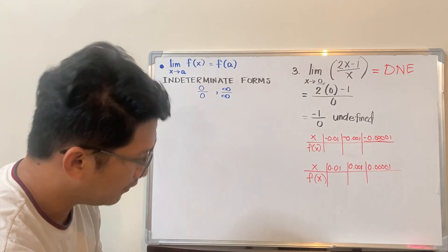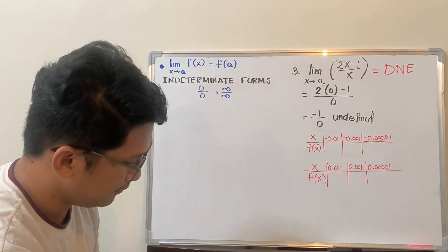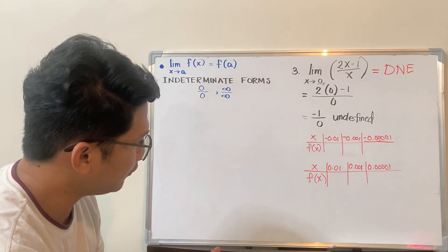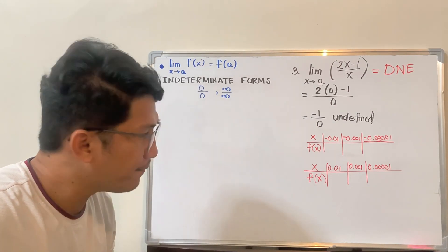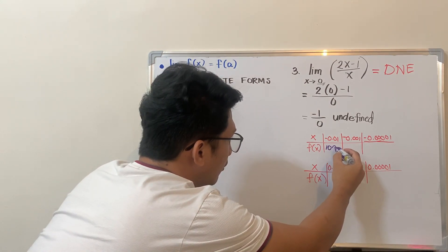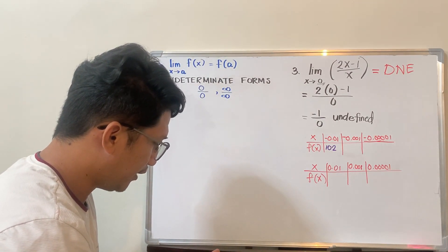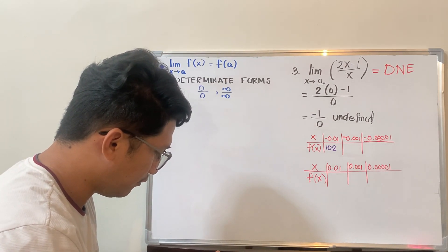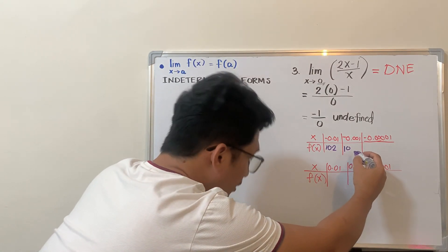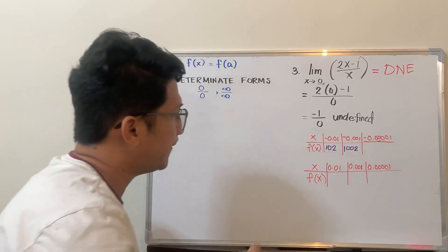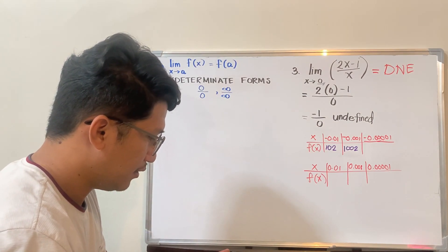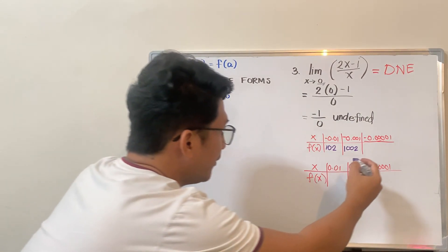Substituting 2 times negative 0.01, minus 1, all over negative 0.01 — the result is actually 102. For the next value, negative 0.001 (3 decimal places), the result is 1,002. And if we use 5 decimal places, the result is 100,002.